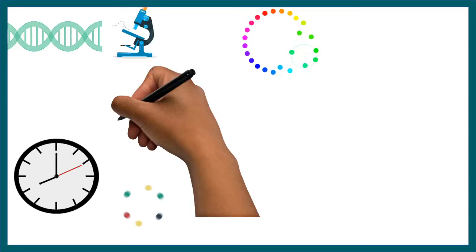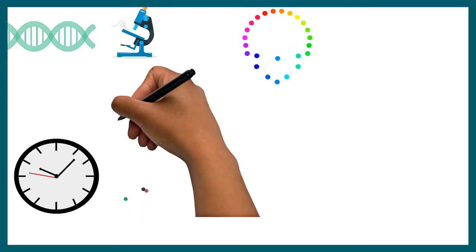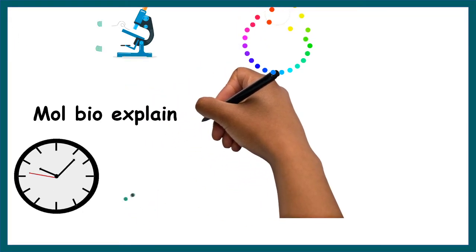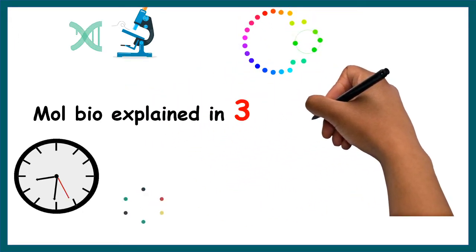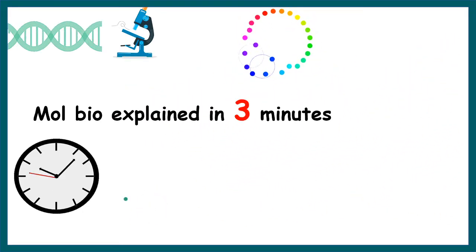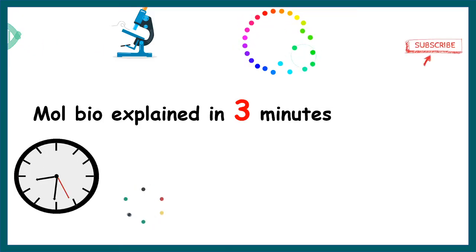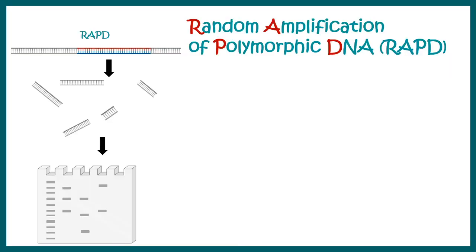Hello and welcome to my playlist of molecular biology explained in three minutes, where I explain a concept of molecular biology in less than three minutes. Today we'll talk about random amplification of polymorphic DNA, otherwise known as RAPD — sometimes also pronounced as 'rapid'.